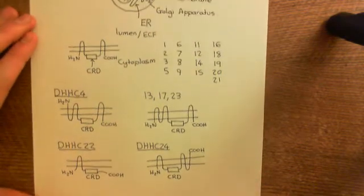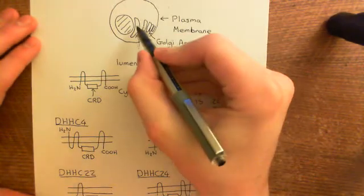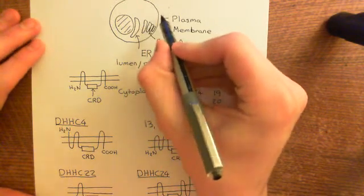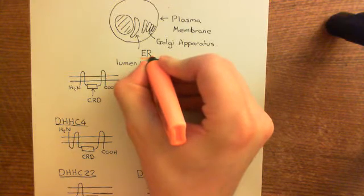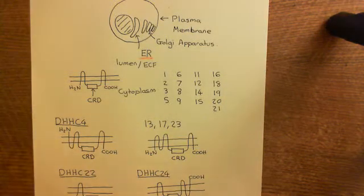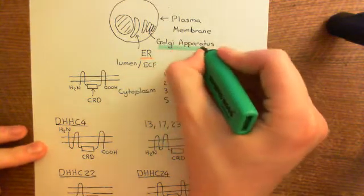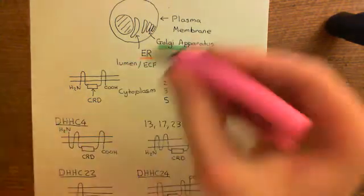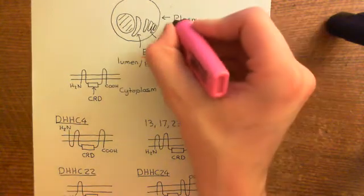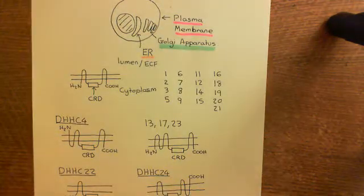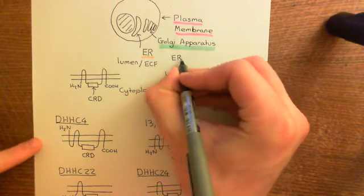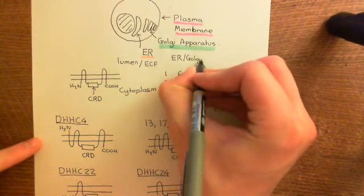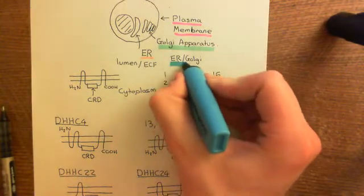There are three main membranes in which these enzymes are present: the ER membrane, the Golgi membrane, and the plasma membrane. Some will be present in a single compartment membrane — just the ER, just the Golgi apparatus, or just the plasma membrane. However, others are present in more than one membrane. Some are present in both the ER and the Golgi, and I'm going to highlight those in blue.